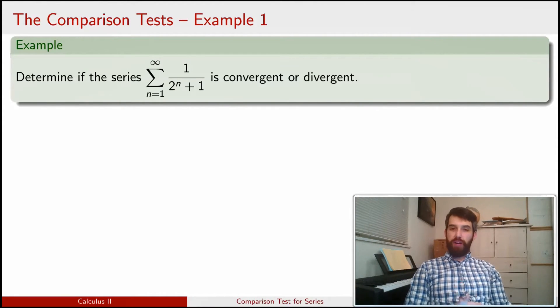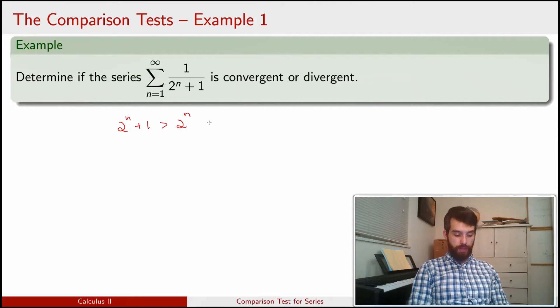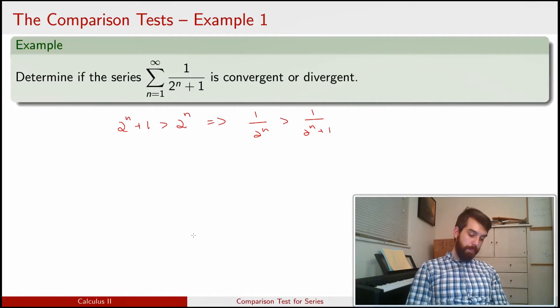Now whenever I'm writing out inequalities, I like to begin with something that I'm really confident about. So in this case, it's not that complicated of a series, but I for sure can begin like this. 2 to the n plus 1 is bigger than 2 to the n, right? No ambiguity there. And then I can rewrite this as 1 divided by 2 to the n is going to be bigger than 1 divided by 2 to the n plus 1.